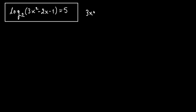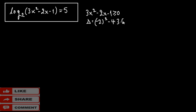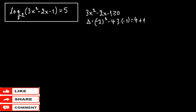We have 3x squared minus 2x minus 1 must be greater or equal to 0. If we find the discriminant here, we have the formula: minus 2 squared minus 4 times 3 times minus 1. This equals 4 plus 12, which equals 16. So we have x equals minus b, which is minus minus 2, plus or minus the square root of 16, over 2 times a, where a is 3.